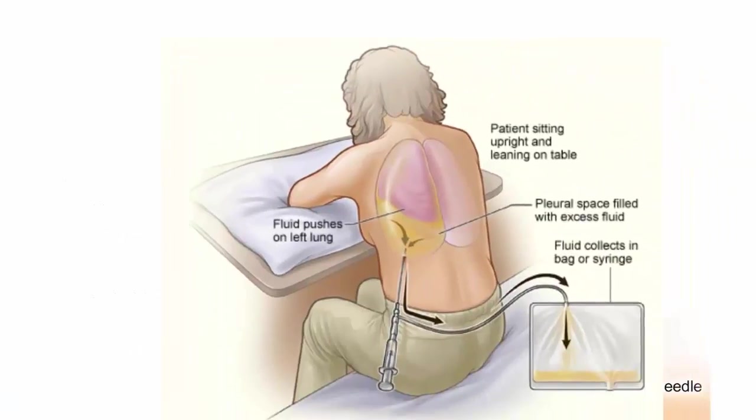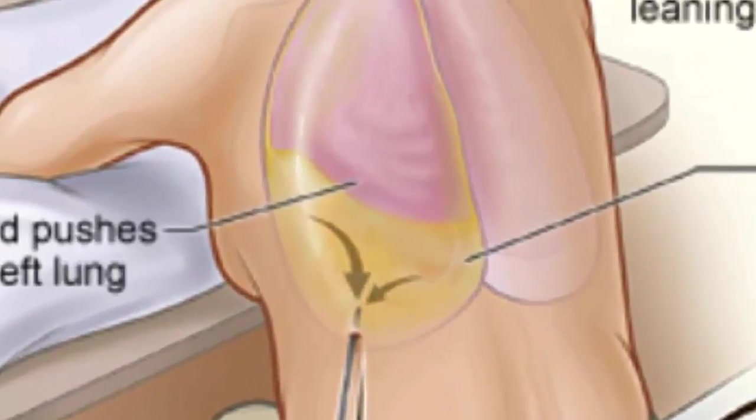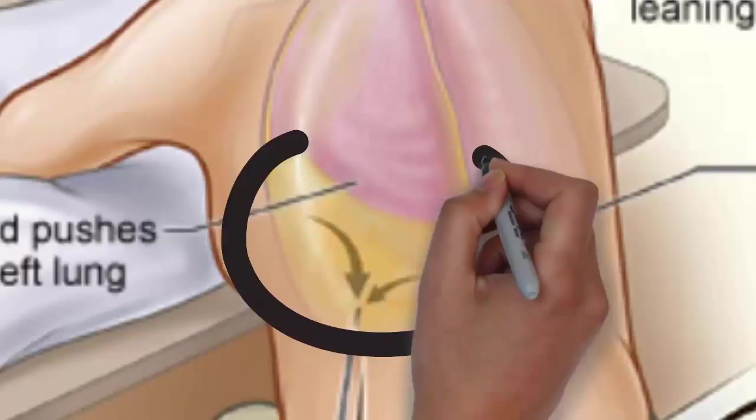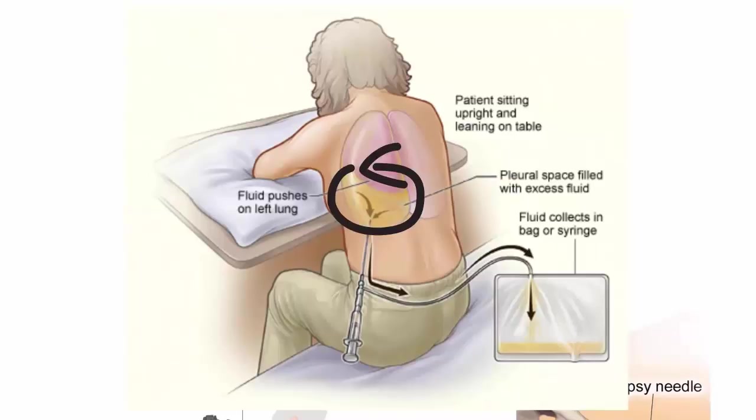Next is thoracentesis. Sometimes, there may be fluid between the lungs and chest wall that is called a pleural effusion. This happened because lung cancers involve the lining tissue of the lungs. With the help of a thin needle that is called thoracentesis, a sample of this fluid is collected and sent for a diagnosis of cancer cells.